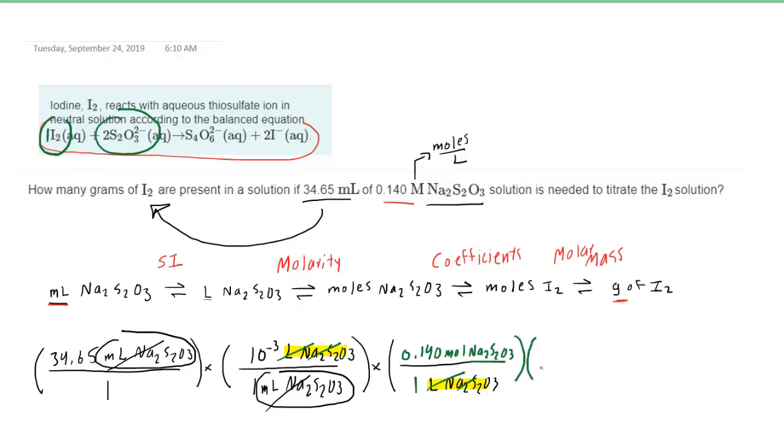So we'll come over here and put the moles of Na2S2O3 down here and then the moles of I2. And from the coefficients, we see again that 1 mole of iodine reacts with 2 moles of Na2S2O3. So we can cancel out these moles.